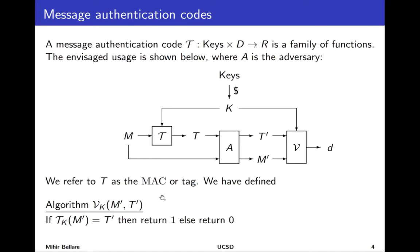Verification is simple and prescribed by the tagging algorithm: given a candidate message and tag, the receiver computes the correct MAC on that message using its key and checks whether that equals the supplied tag. If so, it accepts. Note that no privacy is sought or provided here — the data goes in the clear. At some point we will look at getting both privacy and integrity, but for now the goal is integrity without worrying about privacy.